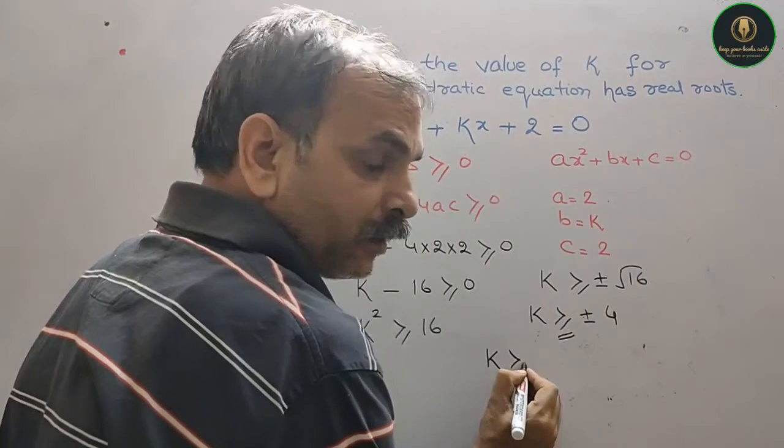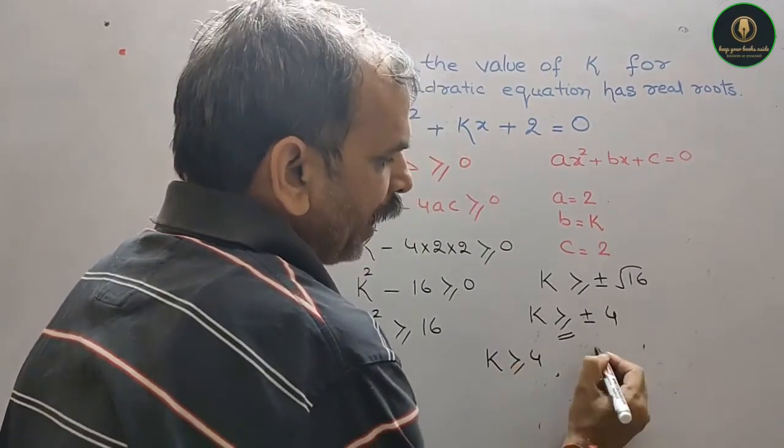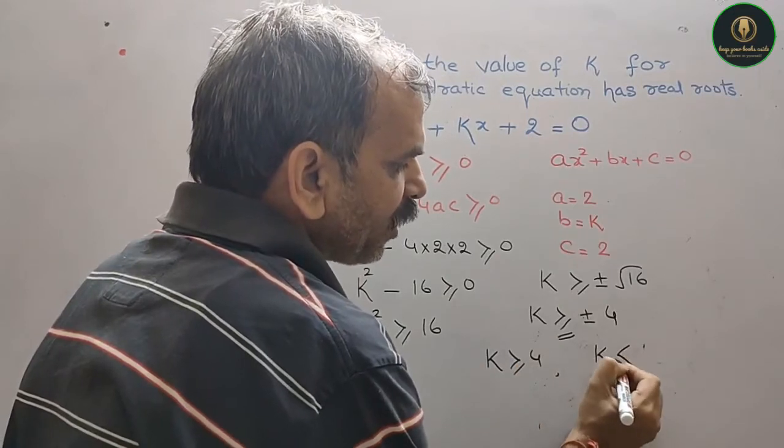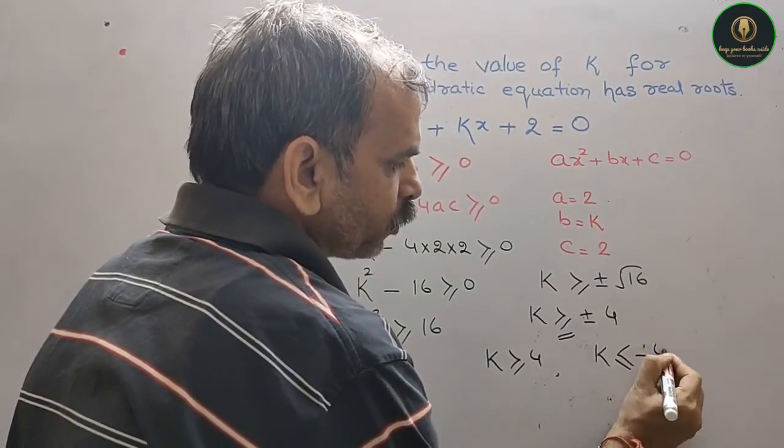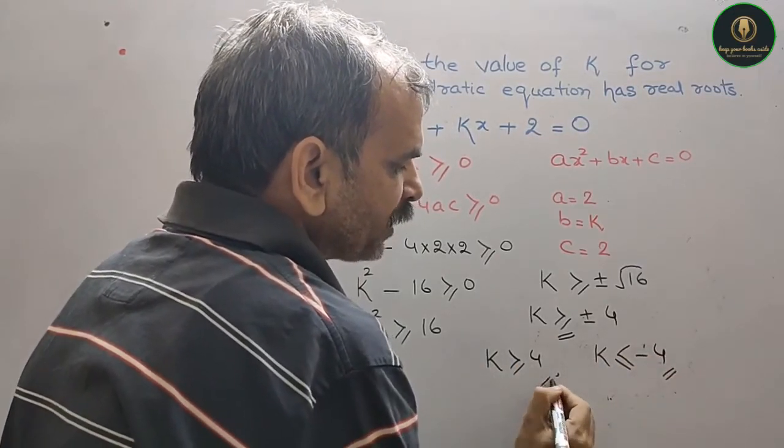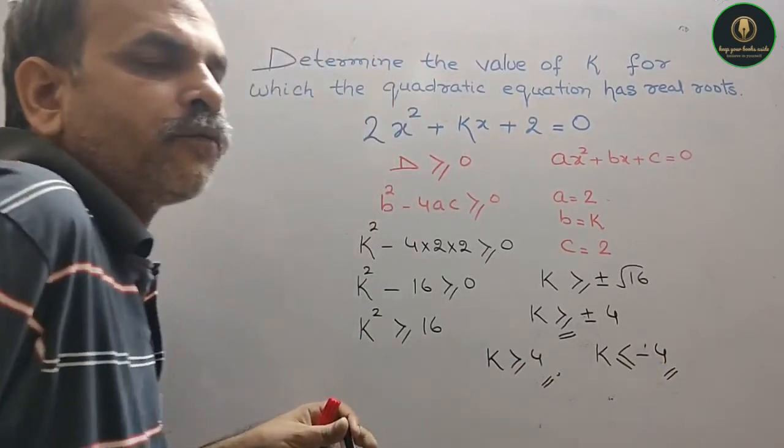k is greater than equal to 4, and k is less than or equal to minus 4. So these are the two values of your k.